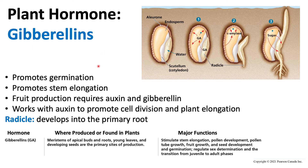Gibberellins are another class of plant hormones. Unlike auxin and cytokinin, which promote growth and differentiation, gibberellins are used in the early stages of plant growth. Gibberellins essentially promote germination, and once a plant has begun germinating, the other hormones like auxin and cytokinin come in to take part in cell growth and differentiation.